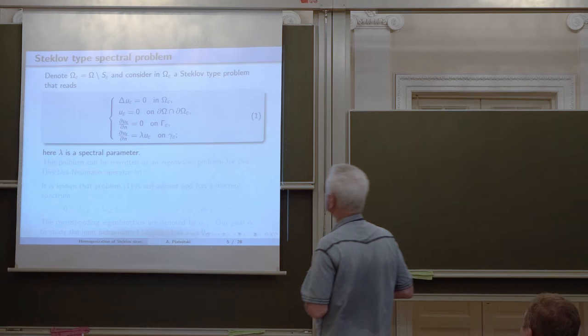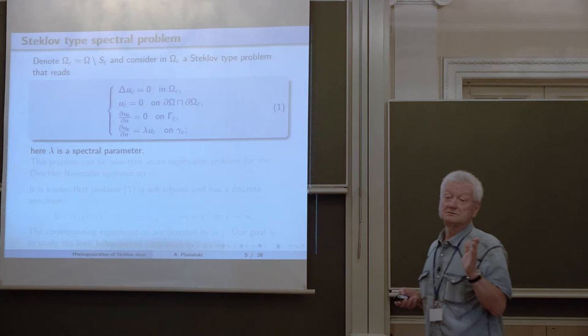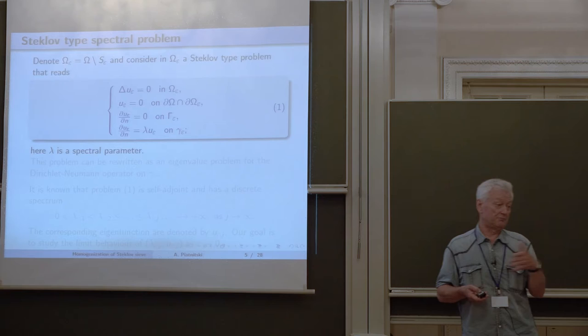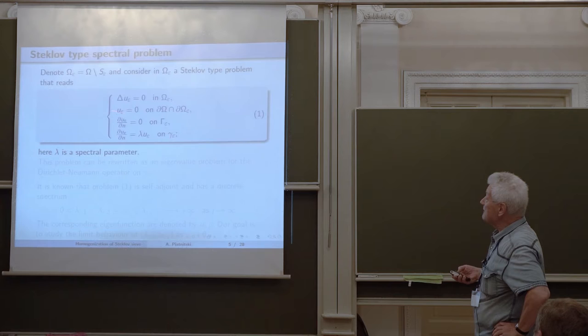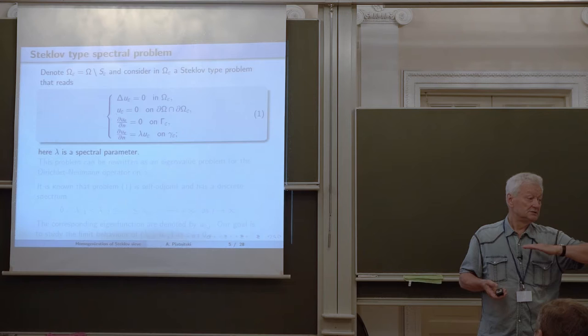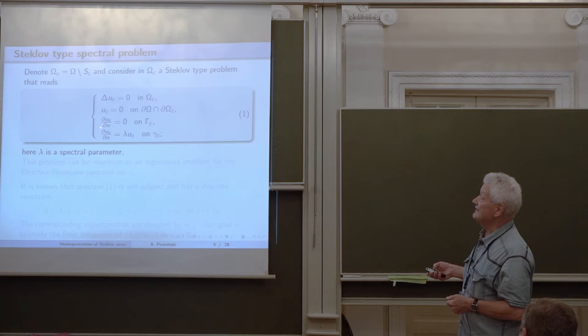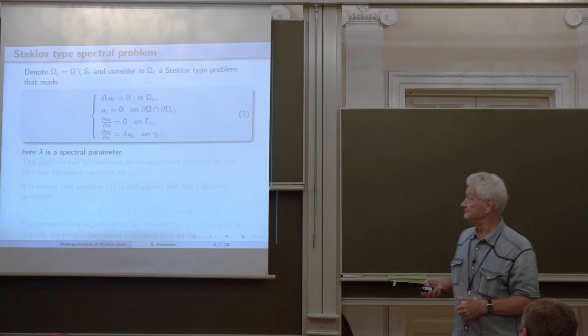That is the geometry of our interface. Now we consider our Steklov-type problem. Note that it is for the Laplacian — instead of Laplacian we could consider a more generic operator, but we use the Laplacian for presentation simplicity. We impose Dirichlet boundary condition on the exterior boundary, homogeneous Neumann condition on the upper and lower boundary of the interface, and the Steklov condition is imposed only on the interior part of the cylinders. Lambda is a spectral parameter.